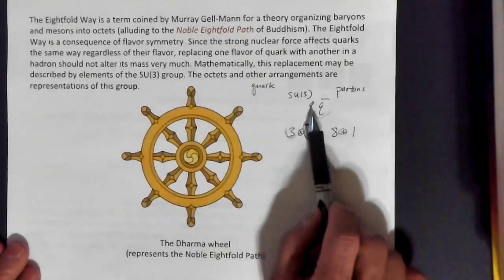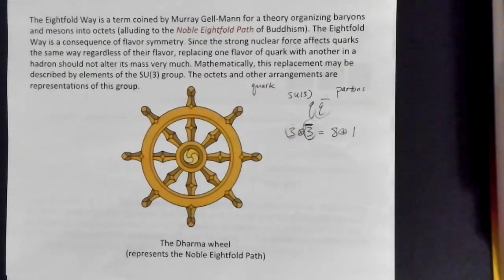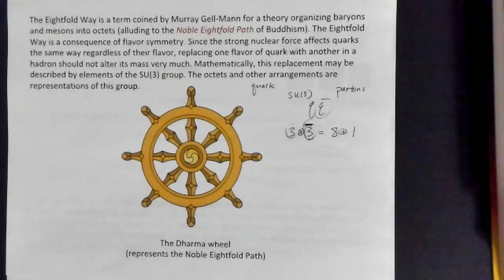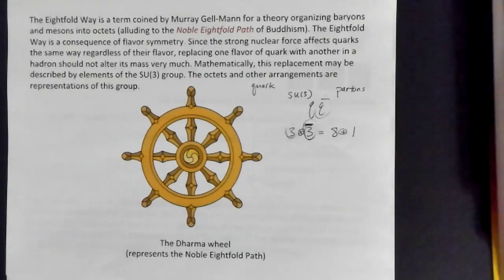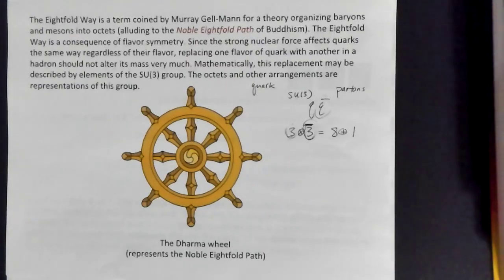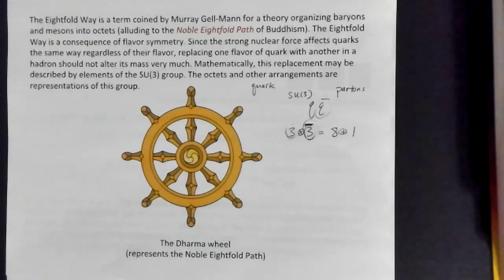These quarks produce all sorts of mesons. One of the things people were seeing in the 1950s and 60s was lots and lots of particles coming out from particle accelerator experiments — they would bang things together and look at all the types of particles that came out. Originally they thought these particles were fundamental, but then they started seeing more and more of them, and that idea seemed quite unlikely.